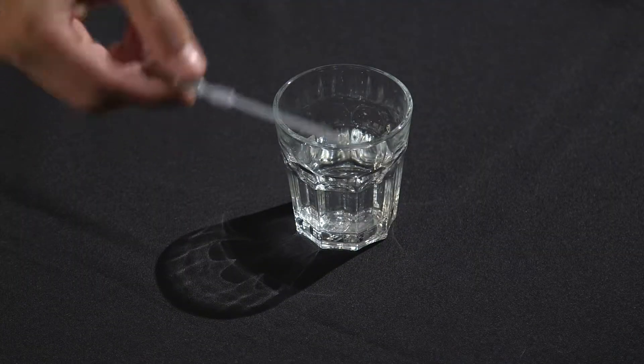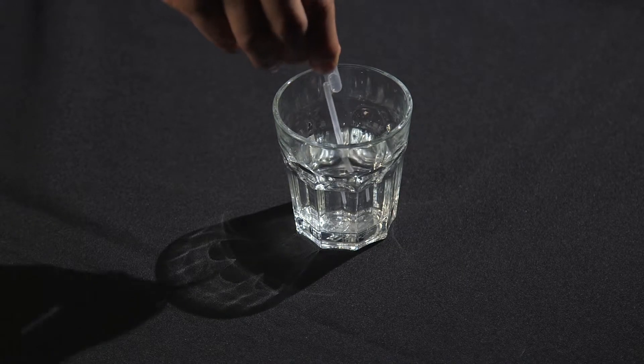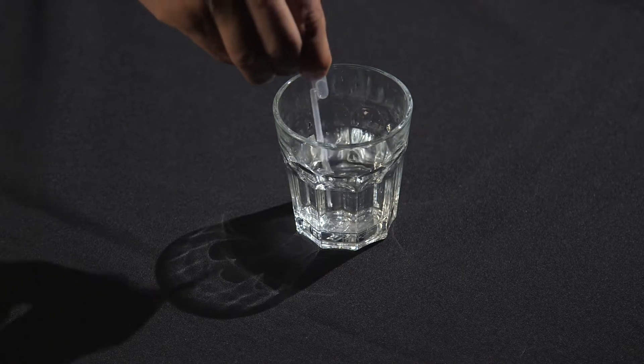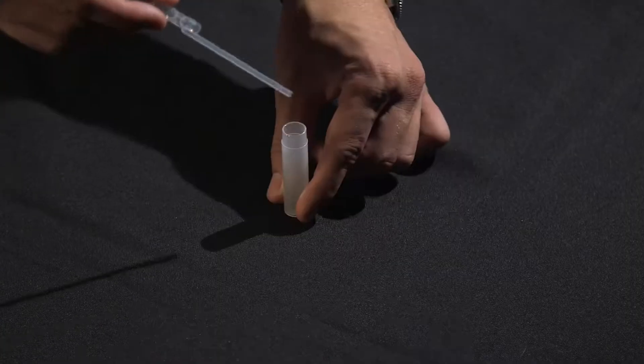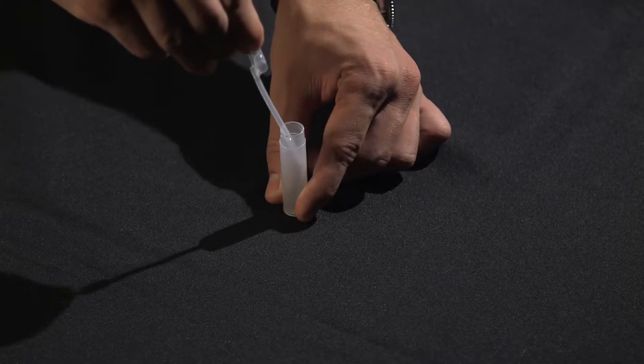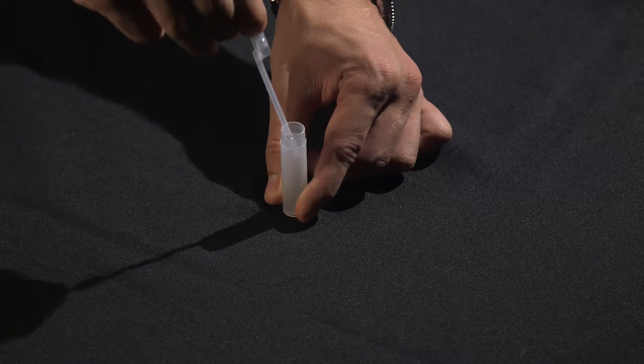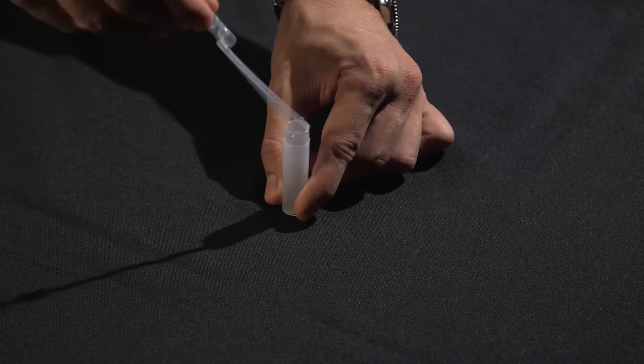Grab your dropper pipe by the top bulb and place the other end of the dropper in your water container. Squeeze the top bulb and then release it to suck the water sample into the lower part of the dropper. Then expel the water into your test vial by squeezing the bulb again. Do that process one more time to add more water into your vial.